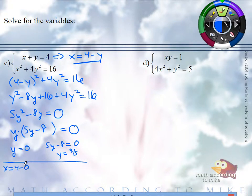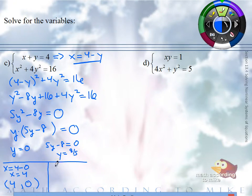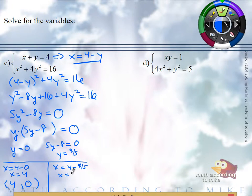We get X to be 4 minus 0, so X equals 4. That ordered pair is (4, 0). Now we're going to plug in 8 fifths. What is 4 minus 8 fifths? 12 fifths. This ordered pair is (12 fifths, 8 fifths).